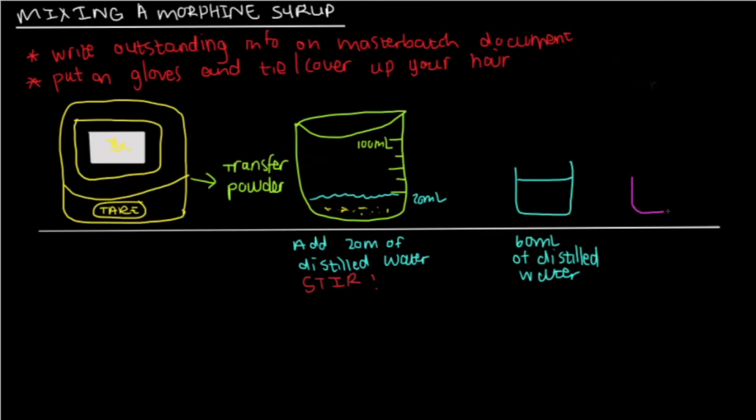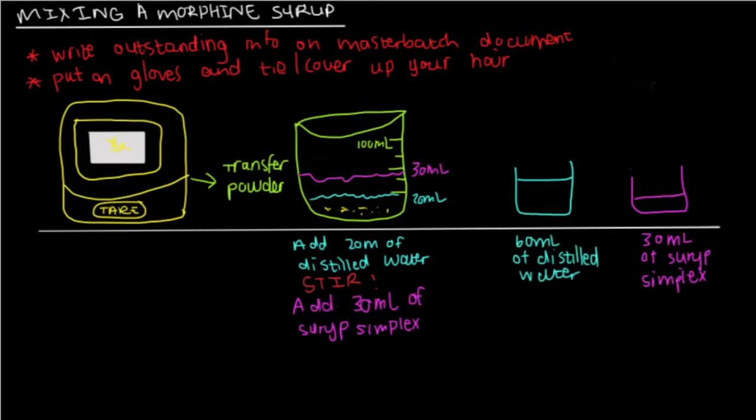Step seven, measure your syrup simplex. In this case, it's going to need 30 milliliters. And you add all of it to your mixture. Again, put on the lid, and shake the final container, or you stir and swirl in your glass cup.